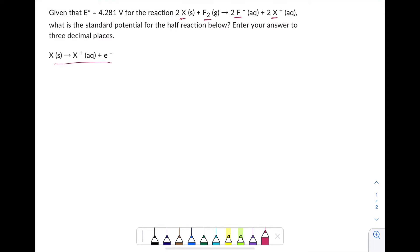It's the unknown half reaction that we're trying to find the standard cell potential for. So we're going to use information about the fluorine half reaction and the overall standard cell potential for the overall reaction to figure out how much is contributed by the X.